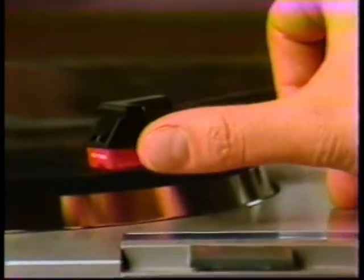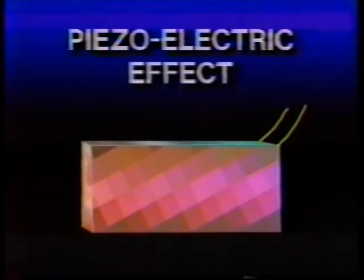Mechanical transducers sometimes use materials that change their electrical properties when a mechanical force acts on them. One example is the piezoelectric effect, found in certain crystals such as those in the pickup of a phonograph needle. When the needle vibrates as it passes through the grooves of a record, the crystal changes shape, producing tiny voltage changes and currents.